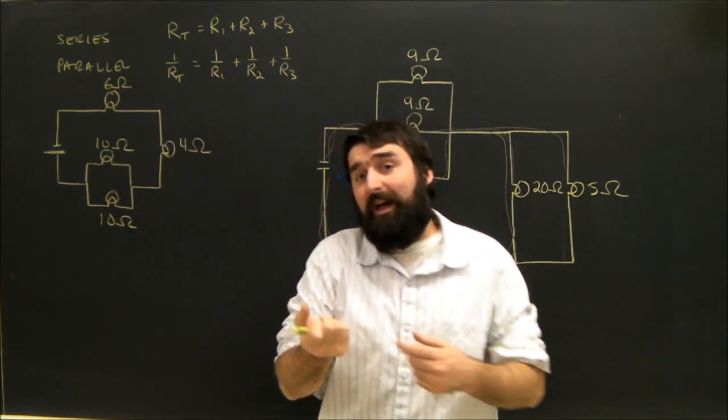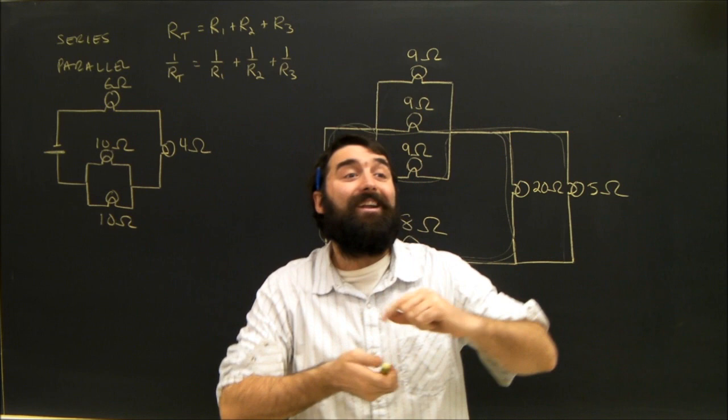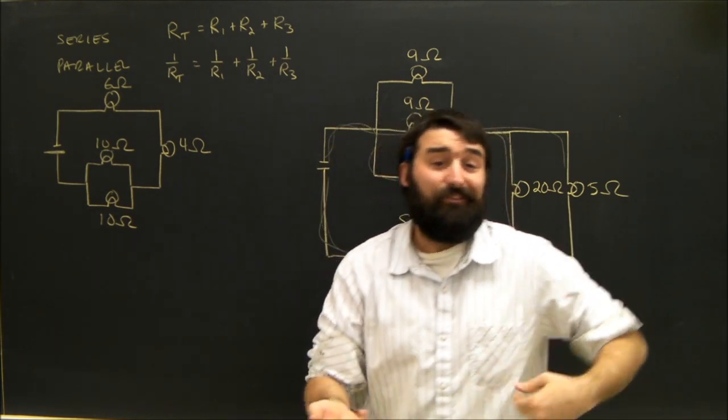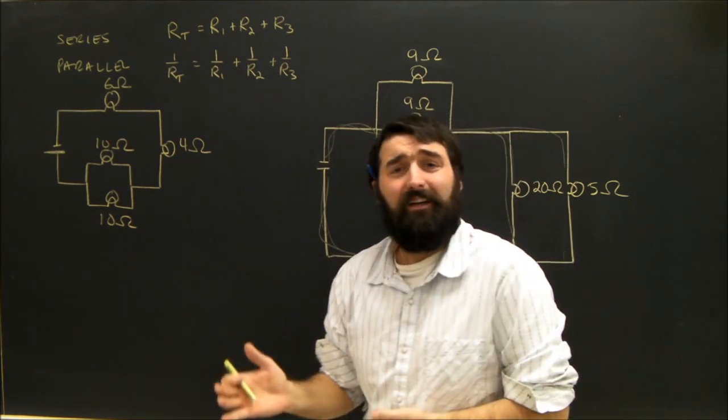If something has a resistance of 6, and then an electron has to go through it, and it has to go through another bulb with the same resistance, its total resistance is 12. That's obvious, I think. That's pretty easy.